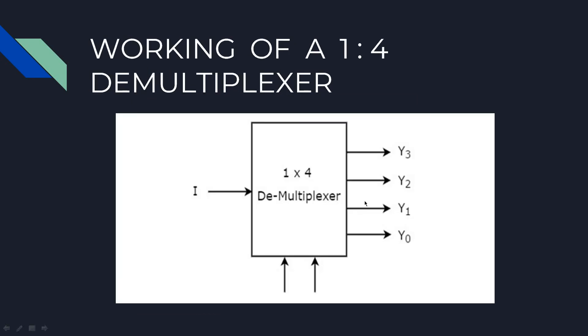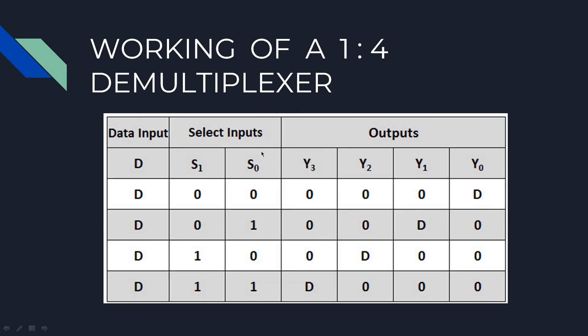The same way 1 to 4 demultiplexer. This is the general block and this is the truth table. D is the data input.